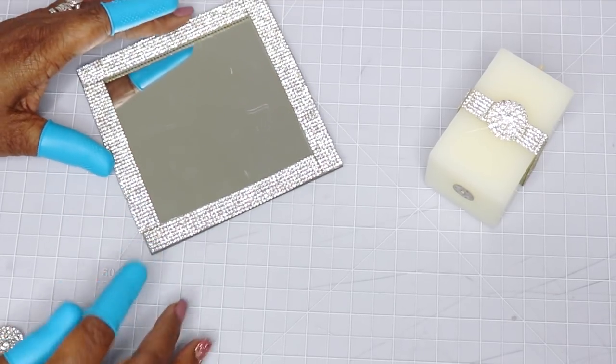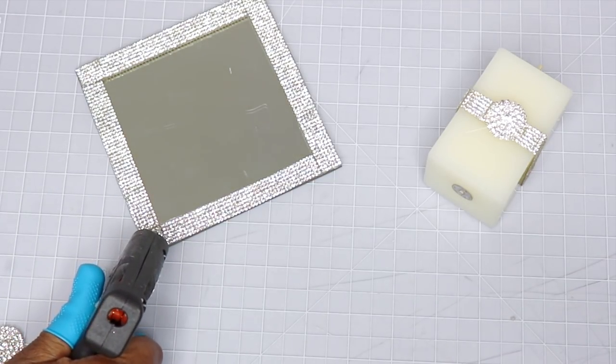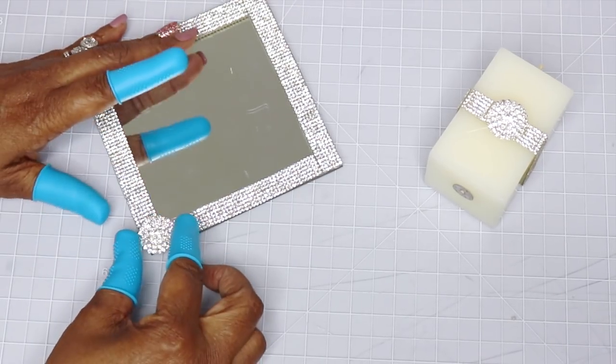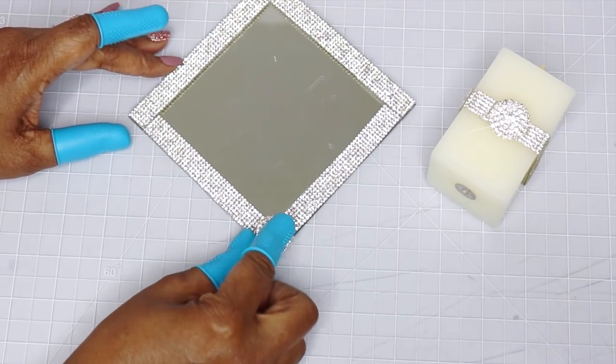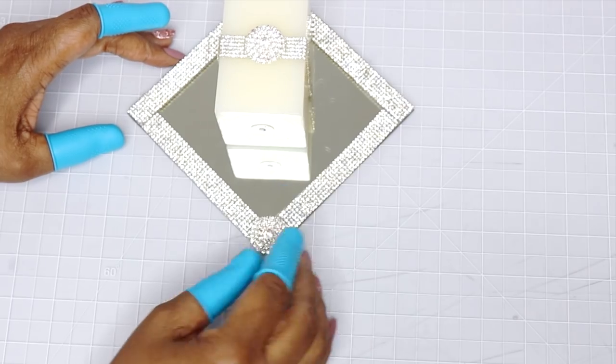I'm going to take another silver and faux diamond embellishment and adhere it to the bottom of my mirror that I just created. I don't like the way that looks right there in the front so I'm just going to cover it up with the embellishment. Now it looks like the candle and the mirror were made for each other.